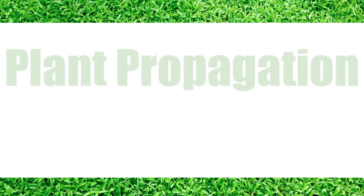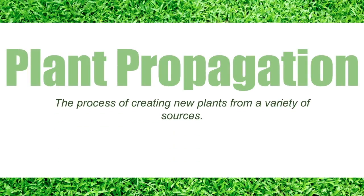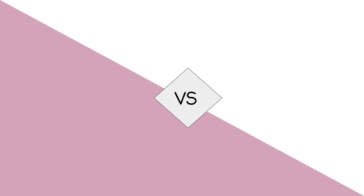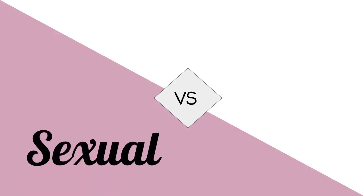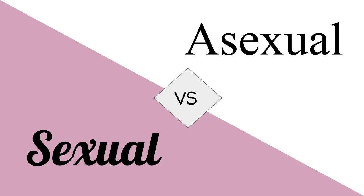Now that you know when to plant the plant, you need to know how. We can do this through plant propagation, or the process of creating new plants from a variety of sources. These sources fall into two categories: sexual and asexual.